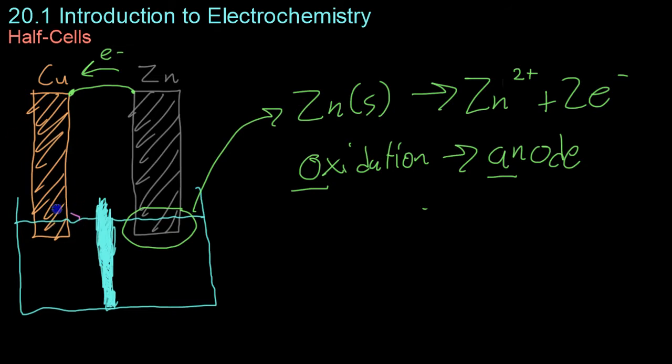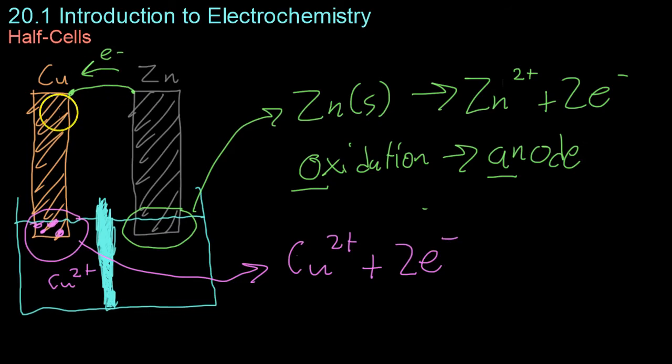Oppositely, the copper over here gets the electrons through this wire and then takes the copper ions from solution and combines them, building up excess copper on the metal down here. That's described by the following reaction. You take your copper ions from solution, add the two electrons that transferred over in the wire from the zinc.